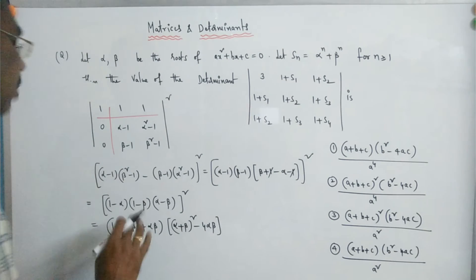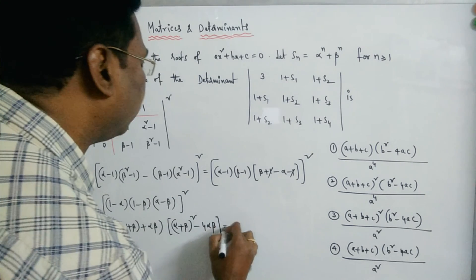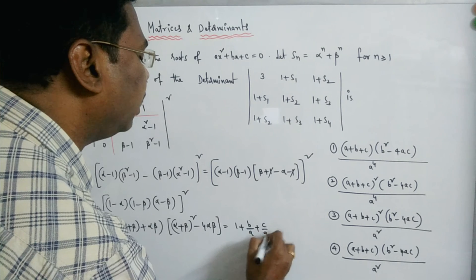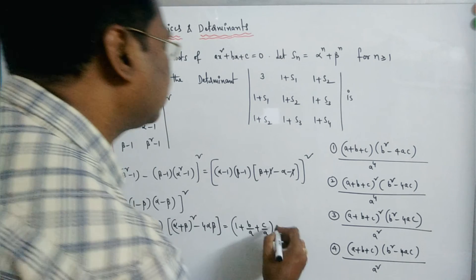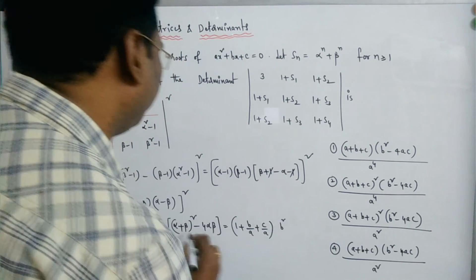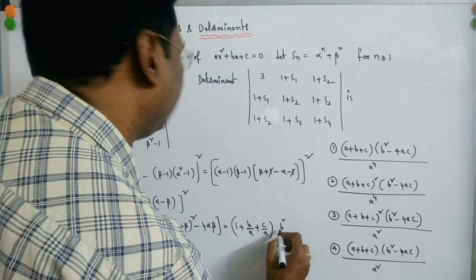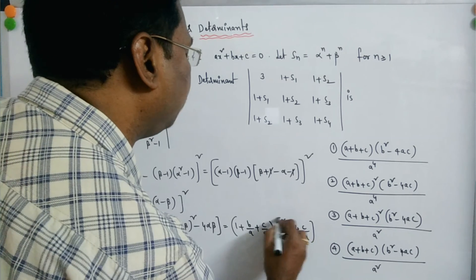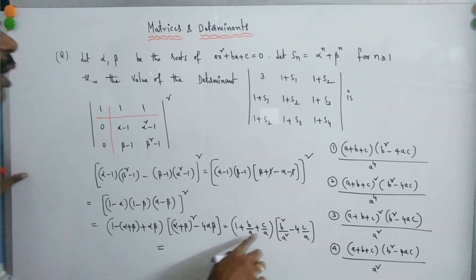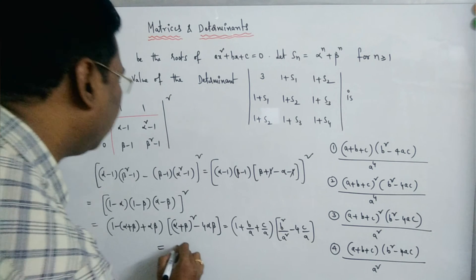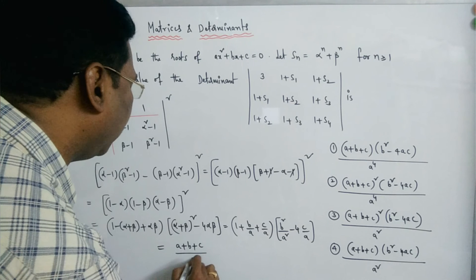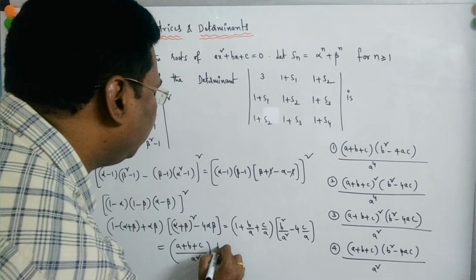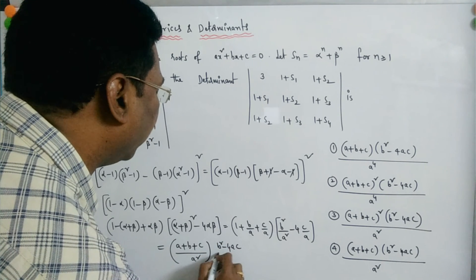Now substituting the sum and product of roots: α + β = −B/A and αβ = C/A. So (1 − (−B/A) + C/A) = (A + B + C)/A. And (α+β)² − 4αβ = B²/A² − 4C/A = (B² − 4AC)/A².